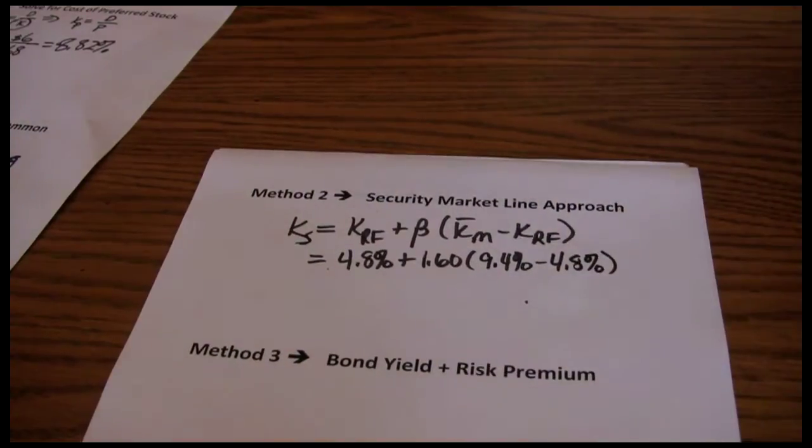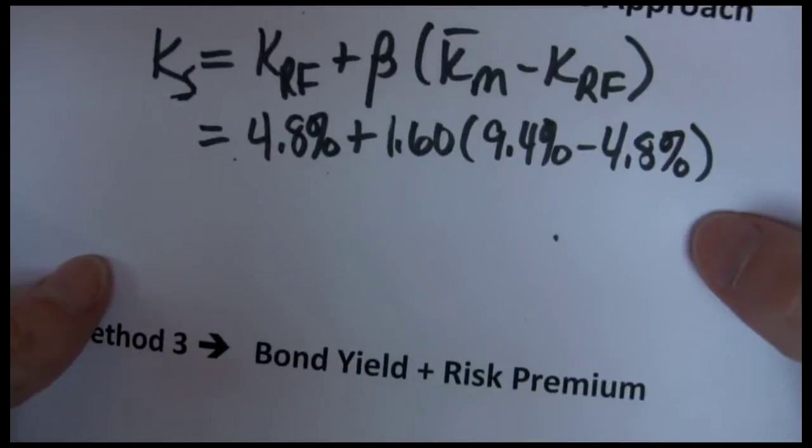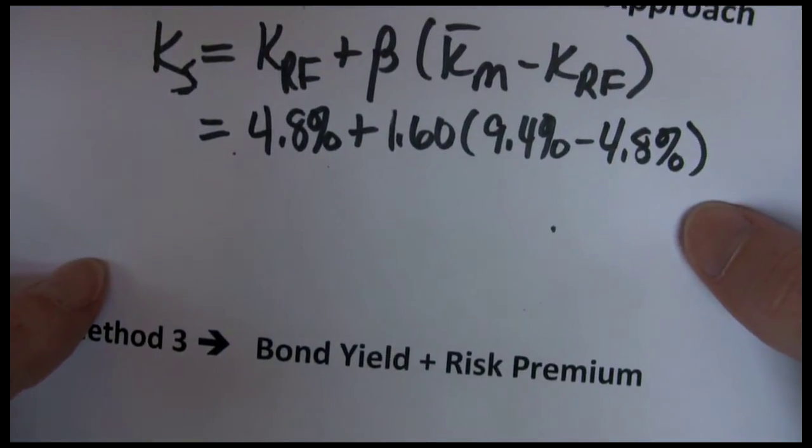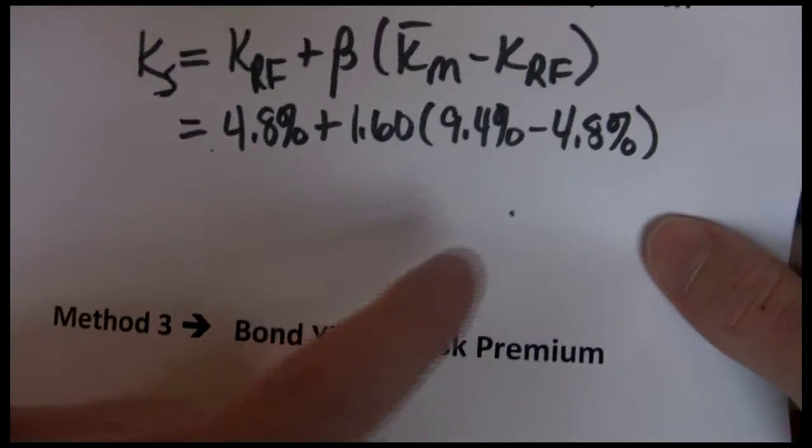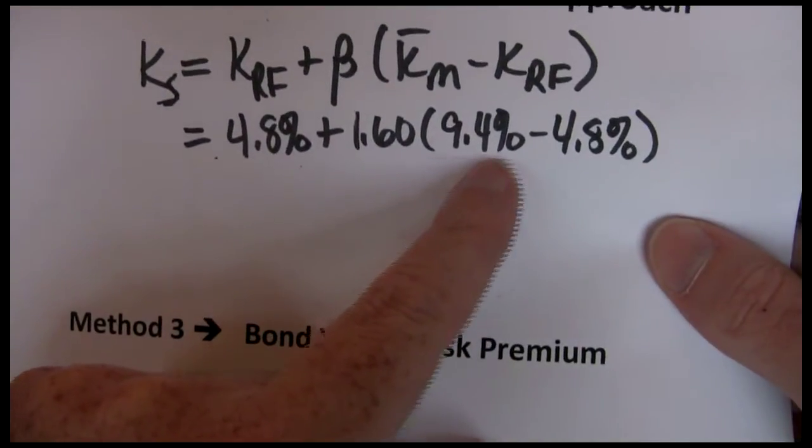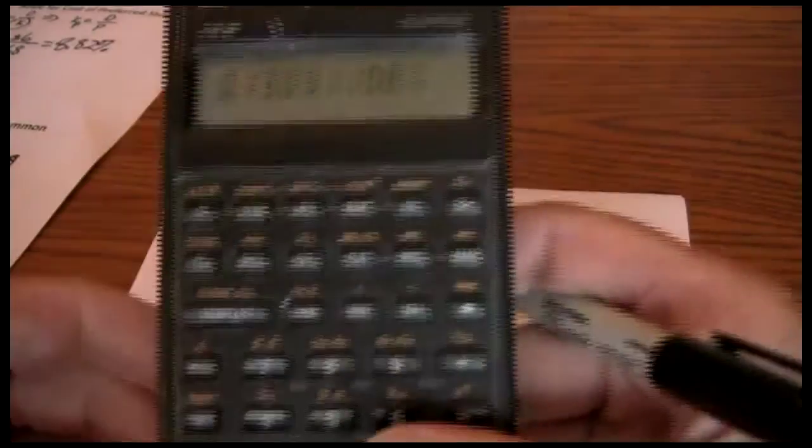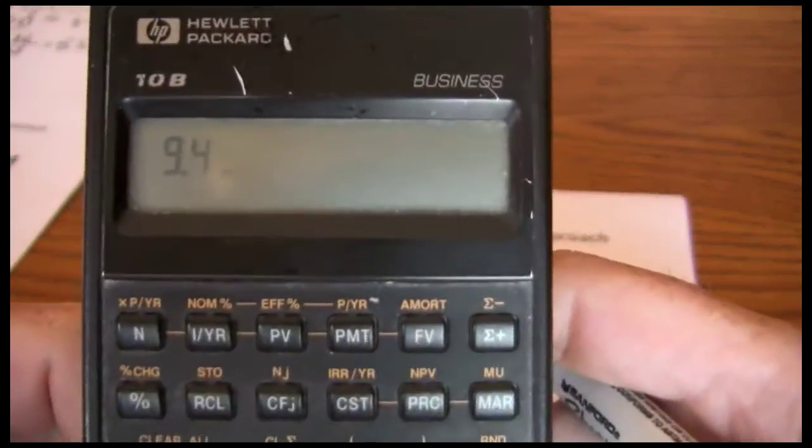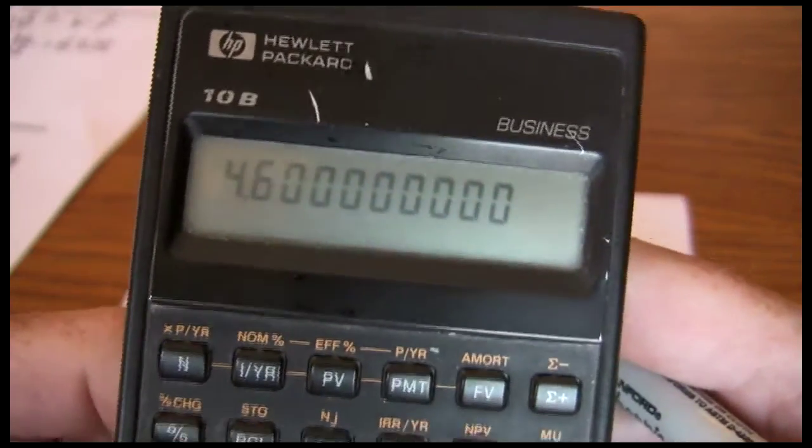Now the most common mistake I see people make on this security market line approach is they get it all set up right and then they make an error in their math because they forget about order of operations. You have to be very careful with your order of operations. Do what's within parentheses first. So we take that 9.4 minus 4.8. 9.4 minus 4.8 gives us 4.6.